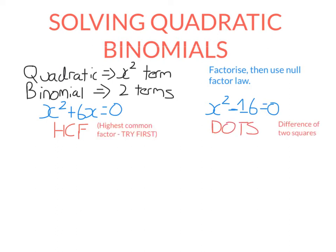When you have a quadratic binomial equation, try to use highest common factor first, and then if you can't, you can probably use difference of two squares.